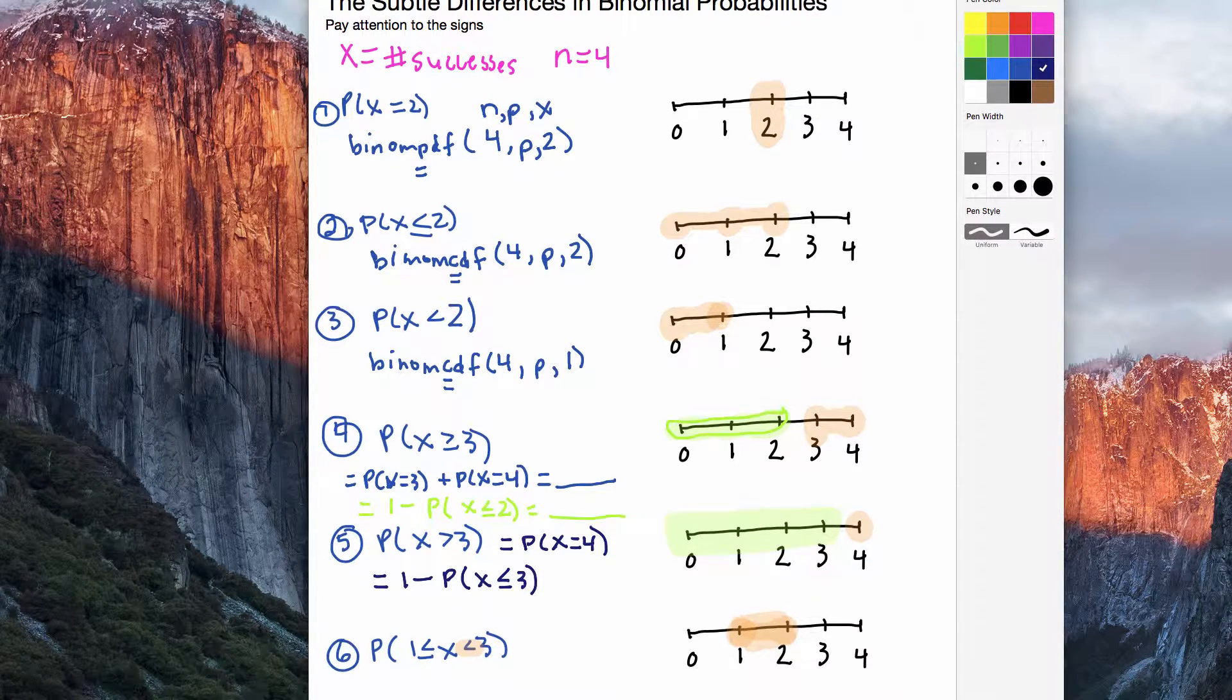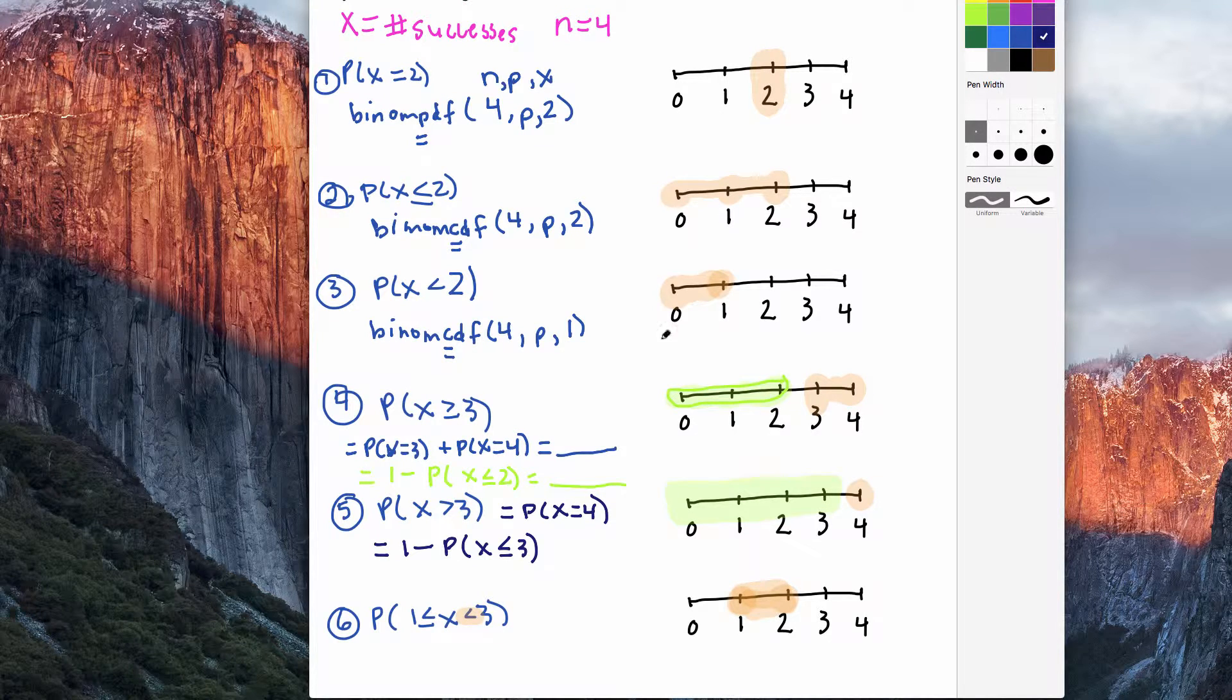And then the last part of this problem, 1 is less than or equal to x, which is less than 3. So directly, I could take the probability that x equals 1 and add it to the probability that x equals 2. I looked at my number line and was able to figure this out. Pretty straightforward calculation out of the 1 and the 2.